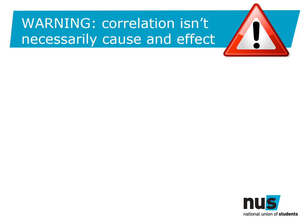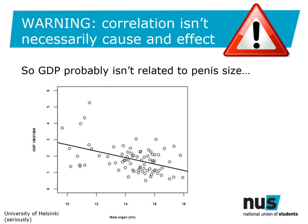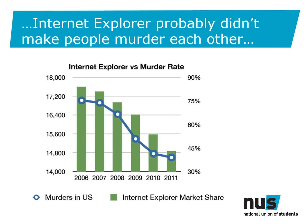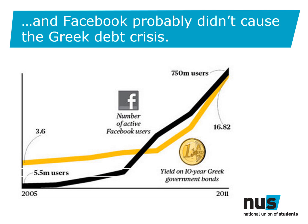It's worth bearing in mind that correlation doesn't necessarily mean causation. Showing a correlation between two variables doesn't necessarily mean that one impacts the other. For example, this graph appears to show a negative correlation between GDP and penis size — it's safe to say this is probably not a causal relationship. This graph showing a decrease in Internet Explorer use and the murder rate probably doesn't prove that Internet Explorer made people murder each other. It's also fairly unlikely that Facebook caused the Greek debt crisis. But spurious correlations like these are used daily in the media, by politicians, and even by people who should know better.